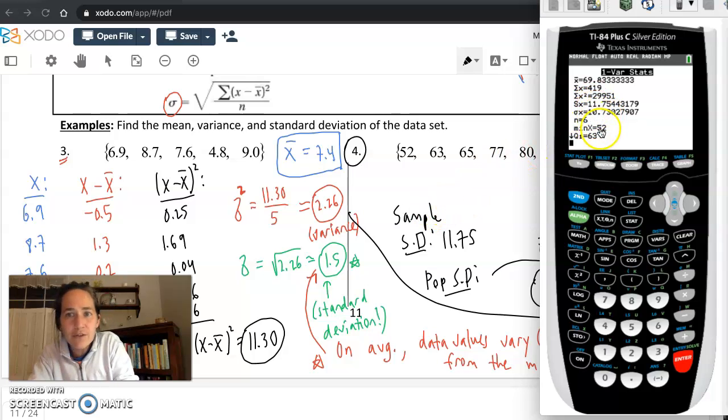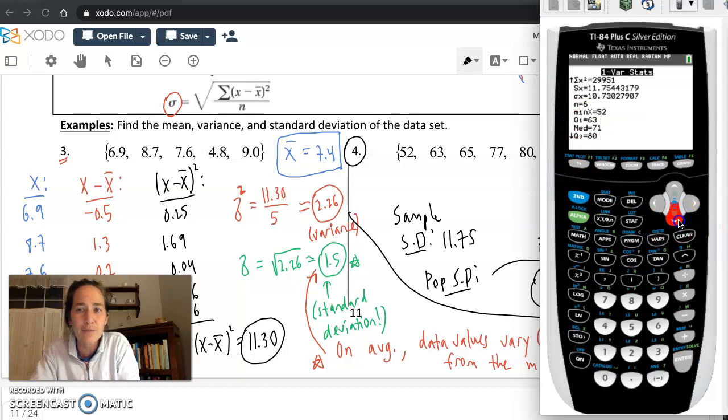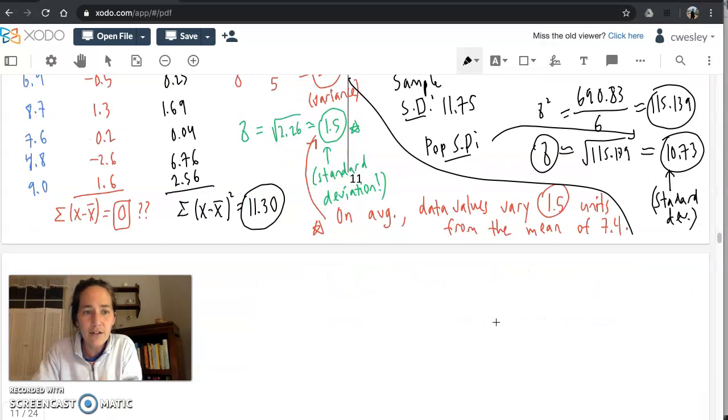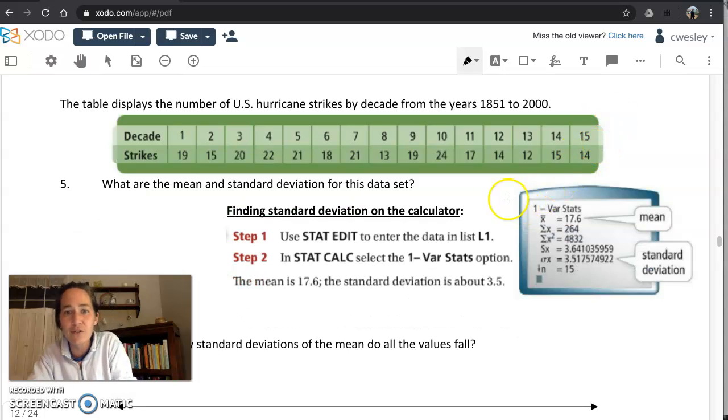Notice these two values aren't too different from one another. They're not really calculated much differently from one another, but unless otherwise stated, unless I ask you for sample standard deviation, you're going to always assume that we're using standard deviation for the entire population. So now I think we know just about what everything on this one variable statistics list gives you. N is going to be the number of values, and then if we needed to make a box plot or something like that, we'd have the five number summary at the bottom.